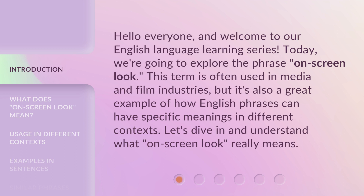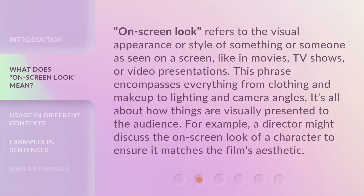Let's dive in and understand what 'on-screen look' really means. 'On-screen look' refers to the visual appearance or style of something or someone as seen on a screen, like in movies, TV shows, or video presentations. This phrase encompasses everything from clothing and makeup to lighting and camera angles — it's all about how things are visually presented to the audience. For example, a director might discuss the on-screen look of a character to ensure it matches the film's aesthetic.